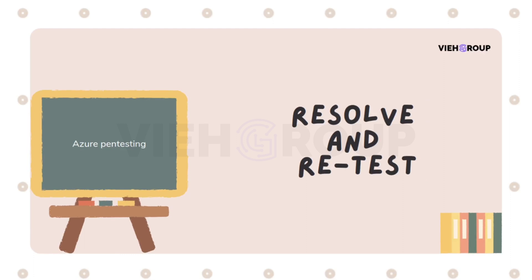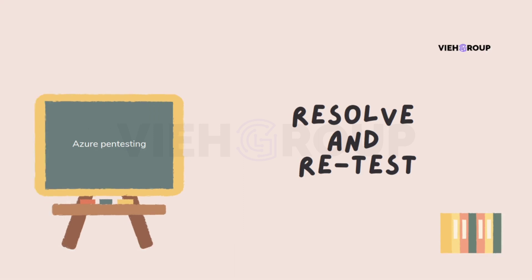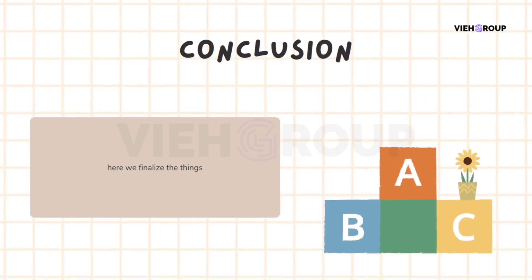The final step is to resolve issues and retest the system to ensure that vulnerabilities have been fixed. These are the steps for performing penetration testing on Azure. If you follow the tips I've shared, you'll be able to find and exploit vulnerabilities in the system.